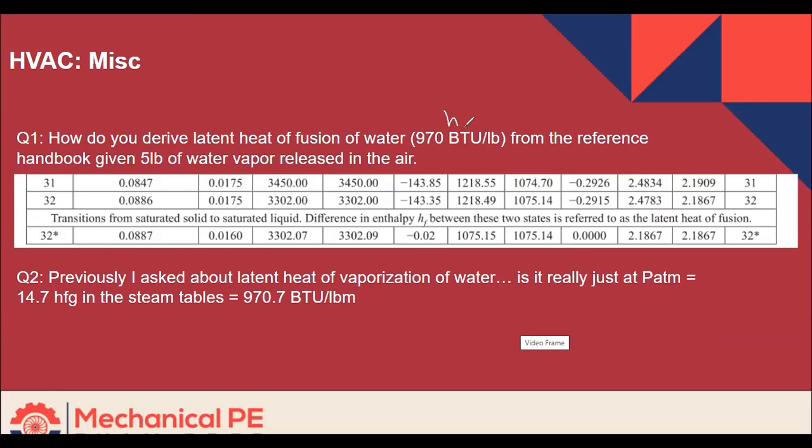So this would be like HFG from the steam table. So that's the latent heat of vaporization. Latent heat of fusion is the amount of heat that needs to be added to melt ice or the amount of heat that's removed to freeze water into ice. Melting, freezing, being opposite sides of the same coin. But it's an examination of the phase change between a solid and a liquid. That's the latent heat of fusion.